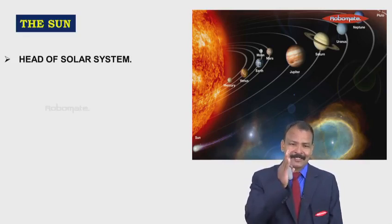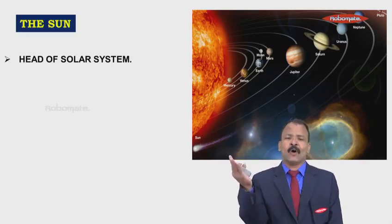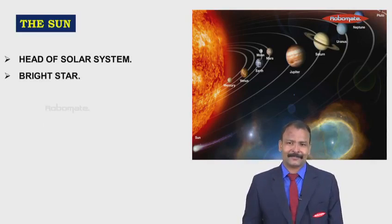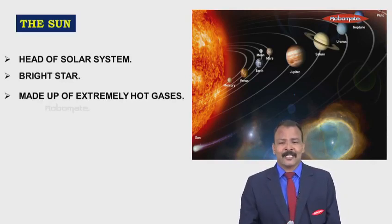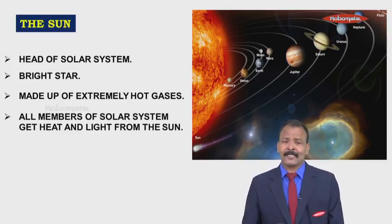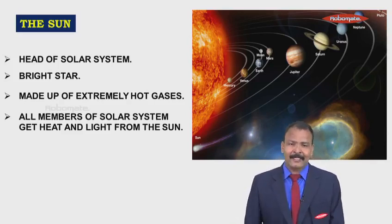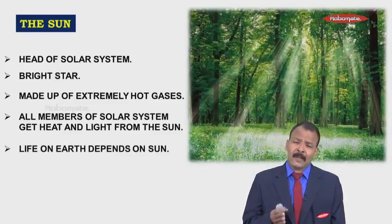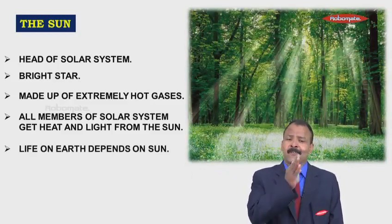As we can see, look at the size and we come to know it is the head of the solar system. All the planets they revolve around the Sun. The Sun is a bright star, it is made up of extremely hot gases. All members of the solar system like the planets and satellites, they all receive heat and light from the Sun.